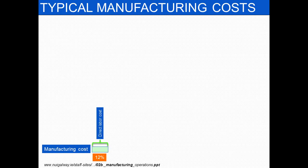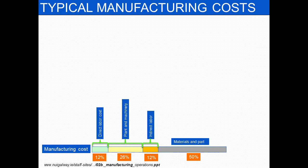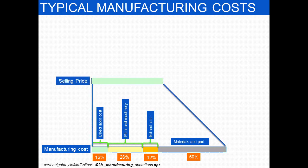What is the further split on manufacturing cost? A typical product contains: 12 percent of budgeted cost spent on direct labor cost, 26 percent of the budgeted cost spent on plant and machinery, 12 percent spent on indirect labor cost, and 50 percent of the budgeted cost spent on material and part cost. All of these together form the 40 percent of manufacturing cost.